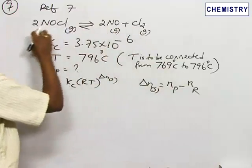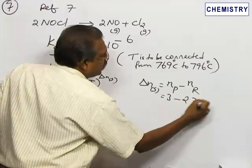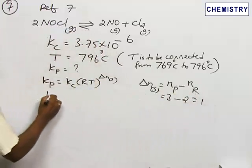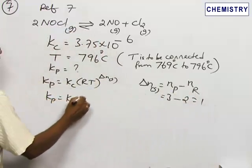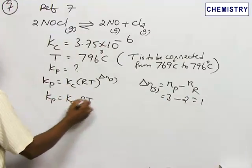So 2 + 1 = 3 moles of products, and here we already have 2 moles of reactants. So 3 - 2 = 1. Therefore, KP = KC(RT)¹, which means KP = KC × RT.